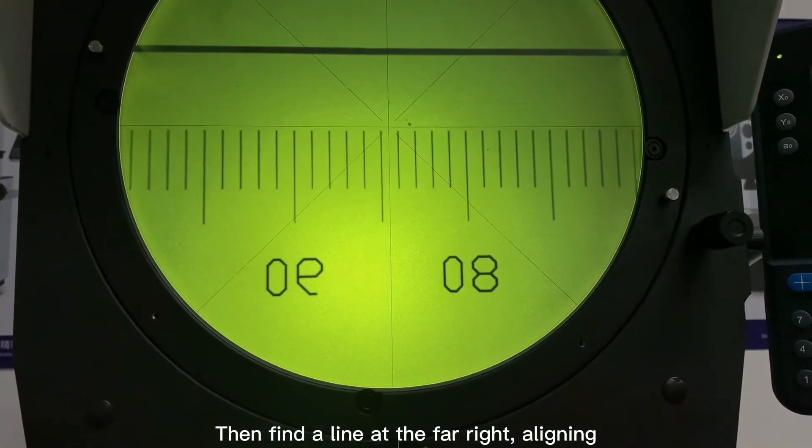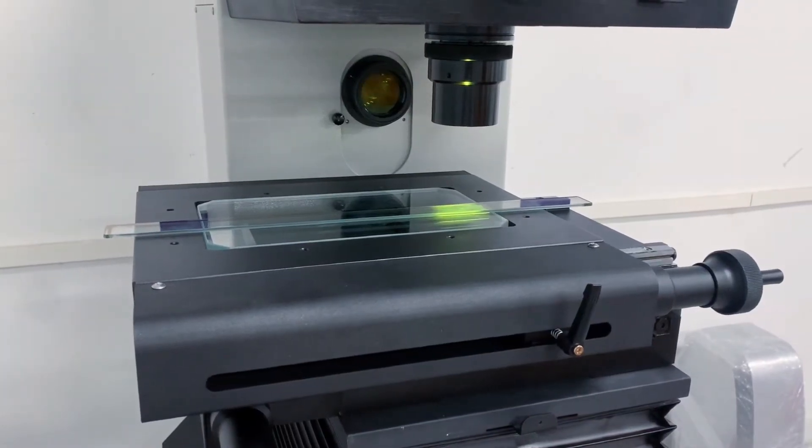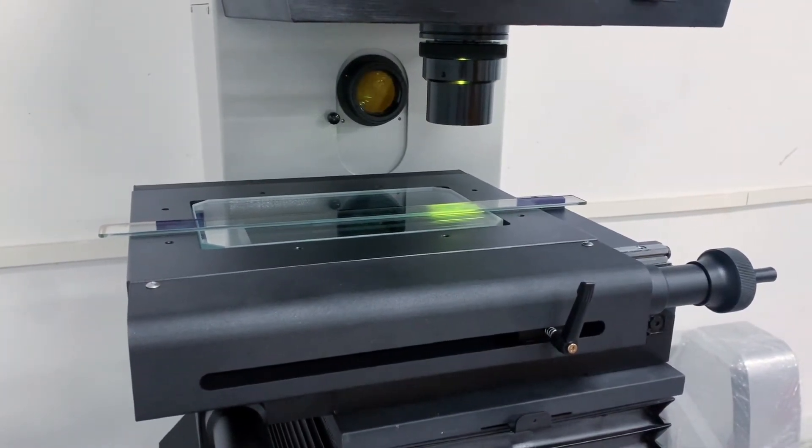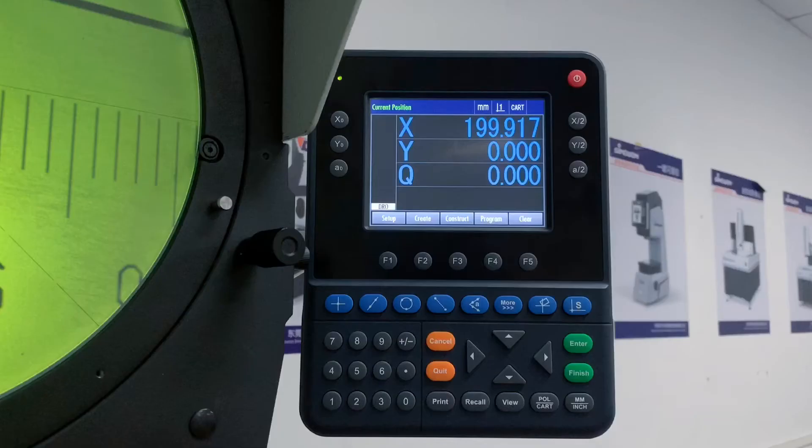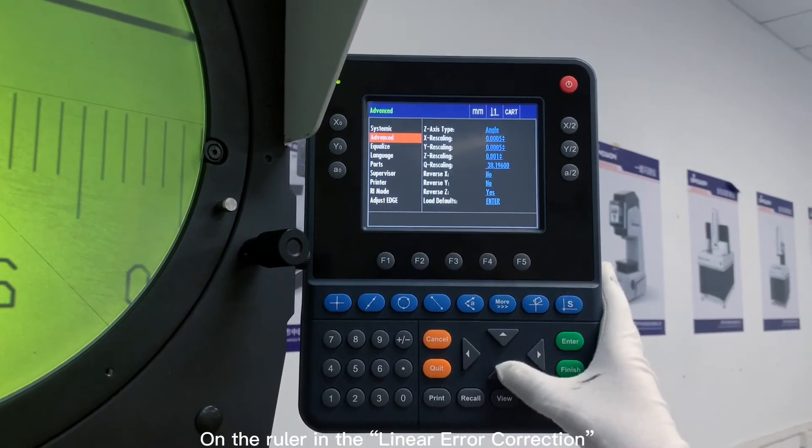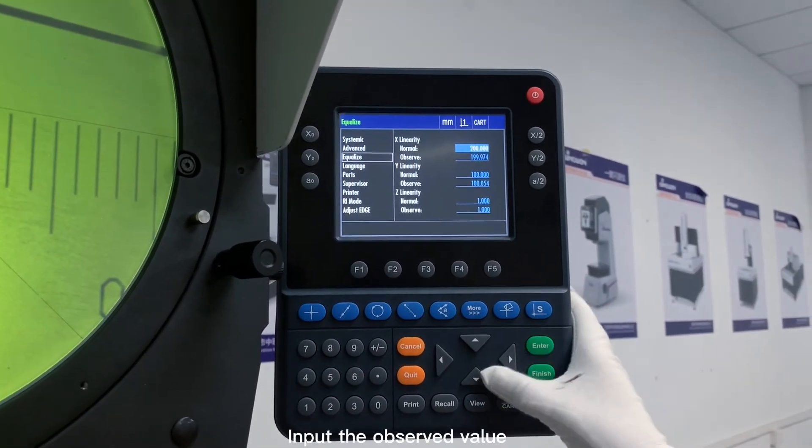Then find a line at the far right, aligning. Input the standard value of the length of scale on the ruler in the linear error correction. Input the observed value.